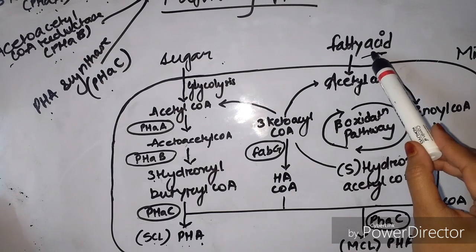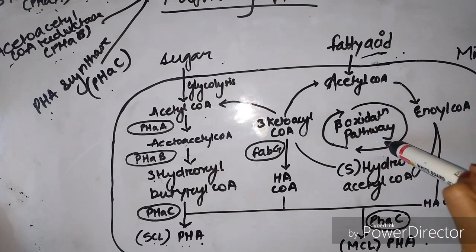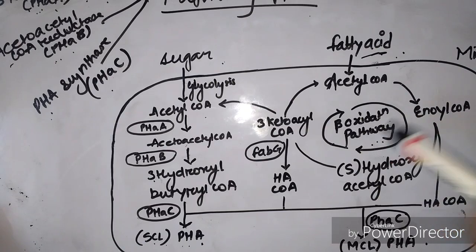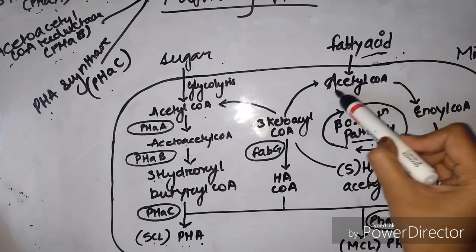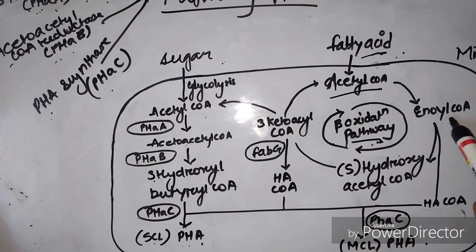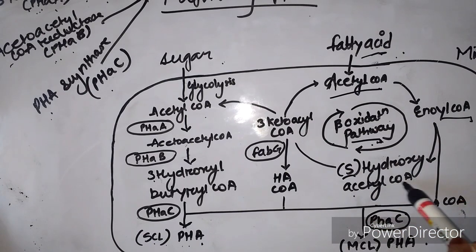The second is fatty acid metabolism, which is typically performed in the beta-oxidation pathway where beta-oxidation takes place on the beta-carbon. First, acetyl-CoA is converted into enoyl-CoA, and then we get two molecules of hydroxyacyl-CoA.